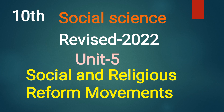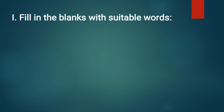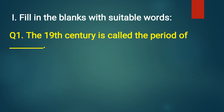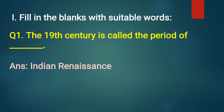Unit 5: Social and Religious Reform Movements exercises. Exercise number 1, fill in the blanks with suitable words. First question: the 19th century is called the period of — Answer: Indian Renaissance. The 19th century is called the period of Indian Renaissance.